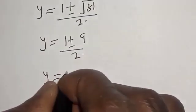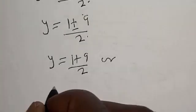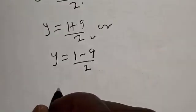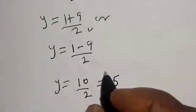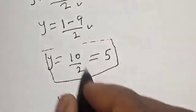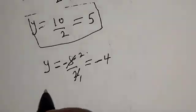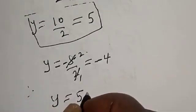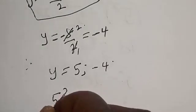So y equals 1 plus 9 over 2, or y equals 1 minus 9 over 2. From the first: y equals 10 over 2, which equals 5. From the second: y equals 1 minus 9, that is negative 8 over 2, which equals negative 4. Therefore, y equals 5 or y equals negative 4. Recall that 5 raised to power s equals y.